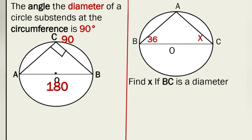With this rule, we can subtend any angle at the circumference provided it's in the semicircle and arises from diameter AB — and we should always get 90 degrees. I can form an angle at any point on the circumference from the same diameter and still get 90 degrees. That is a powerful property we shouldn't forget. Let's go through a quick question.